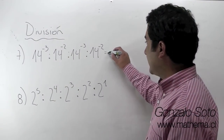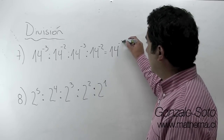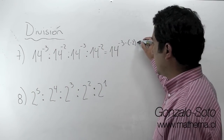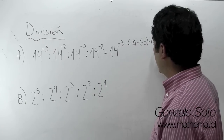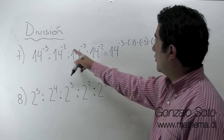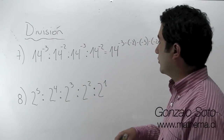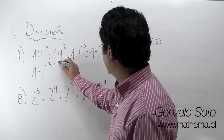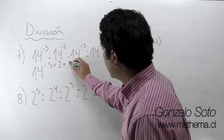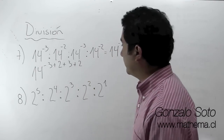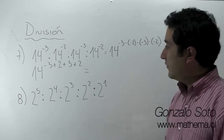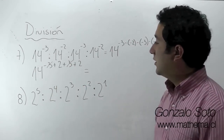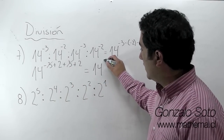En el ejercicio 7 tenemos que la base es 14. Como es división, restamos los exponentes, pero vamos a restar un negativo, por lo tanto lo ponemos entre paréntesis para no confundirnos: menos, menos 2; menos, menos 3; menos, menos 2. Menos y menos va a quedar más. Entonces tenemos: menos 3 más 2, y más 3, y más 2. Fíjense: tenemos menos 3 y más 3 — son iguales con signos contrarios, esto es 0. ¿Qué nos queda? 2 más 2: si la base es 14, el exponente es 4.